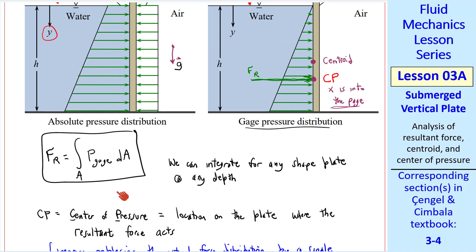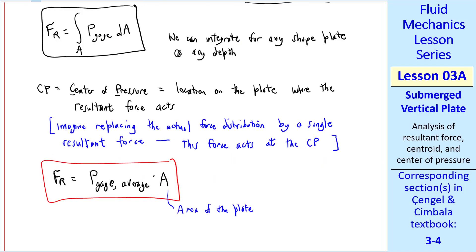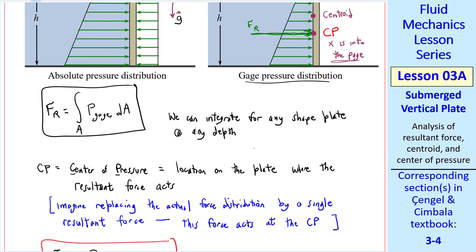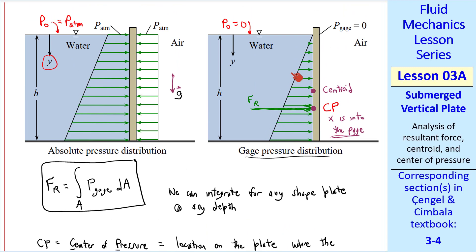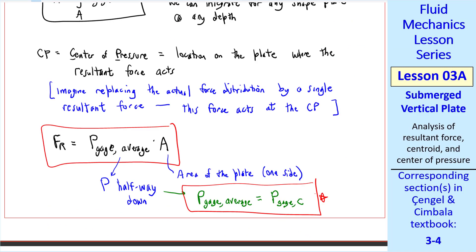For our case of a vertical plate here, in a single liquid, the pressure increases linearly with depth. So if you do this integration for a vertical plate like this, you'll find that FR is P gauge average times A, where A is the area of the plate on one side, of course, just the submerged side. And the average gauge pressure is the pressure halfway down. Again, this is because of the linear nature of the pressure distribution. In other words, the pressure at the centroid, we'll call P gauge C, is equal to P gauge average, where, again, C is the centroid of the plate. This resultant force acts perpendicular to the plate.